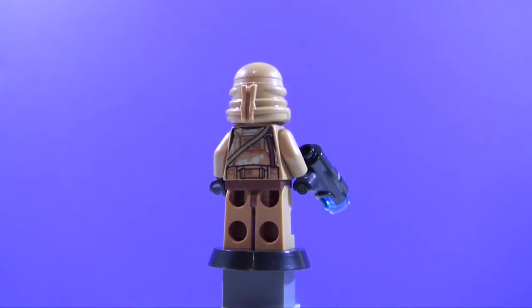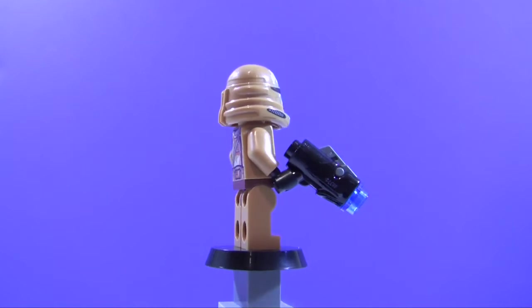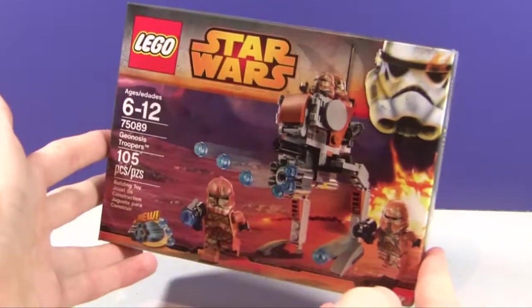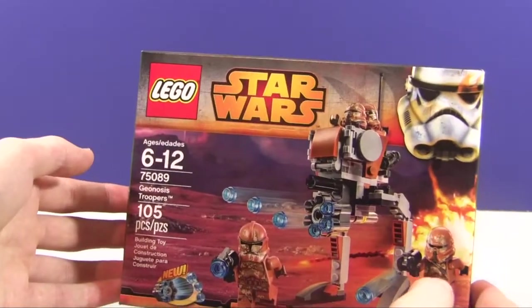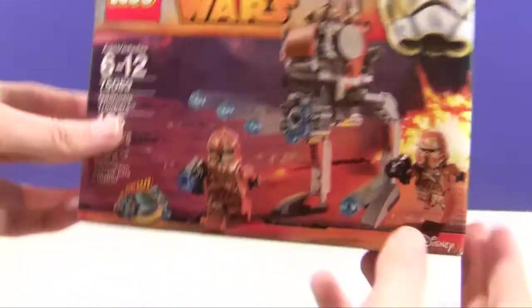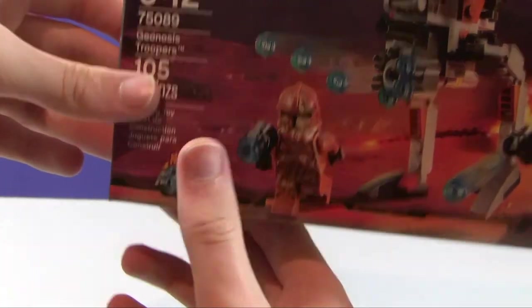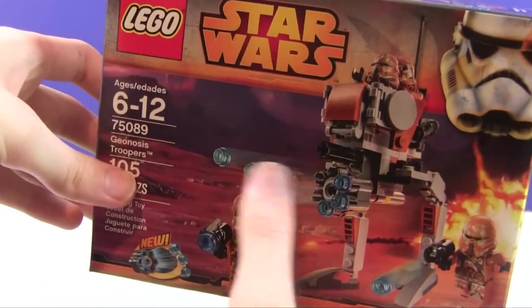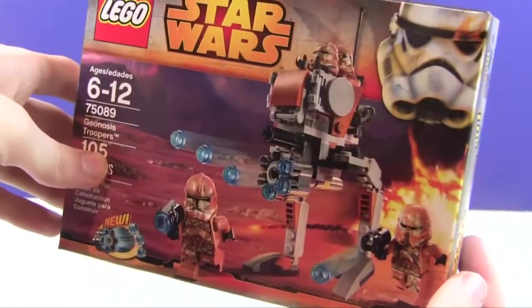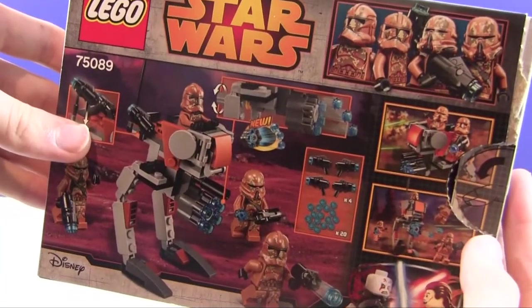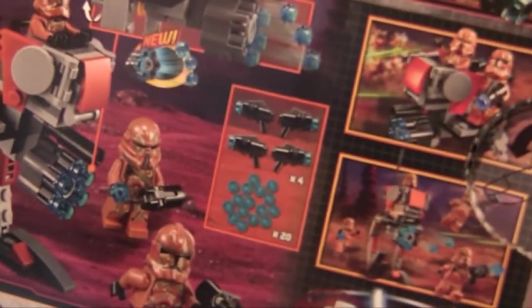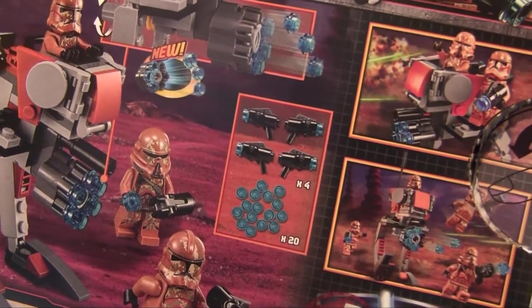Here is the box. It's a standard battle pack size box. You can see LEGO Star Wars, the set number, and all that information. It does advertise the new six shooter, which I think is pretty cool. They got a cool little art image there. And then on the back, once again advertising that six shooter.